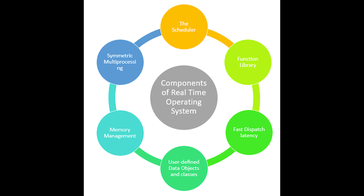Let's talk about the components. First, we have the scheduler — this is the component that determines which order tasks will be executed, and it is generally based on priority. Then we have symmetric multi-processing, which refers to the ability to handle multiple different tasks simultaneously so that parallel processing can be done.